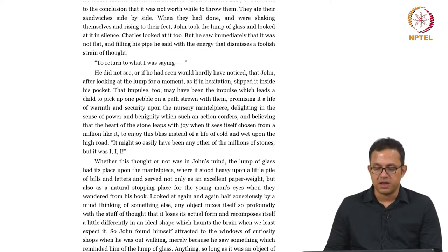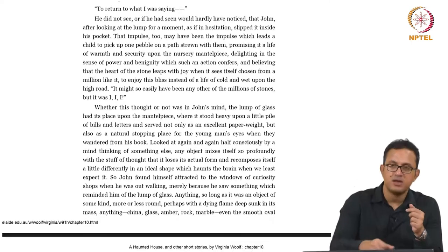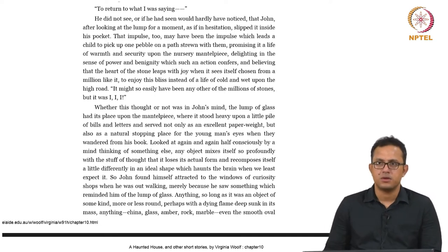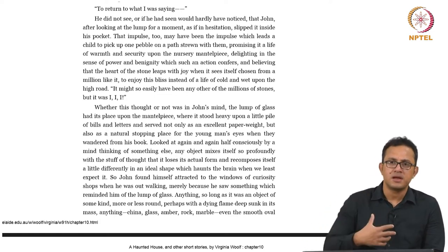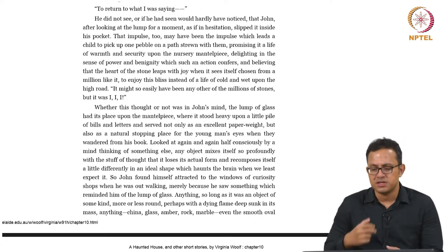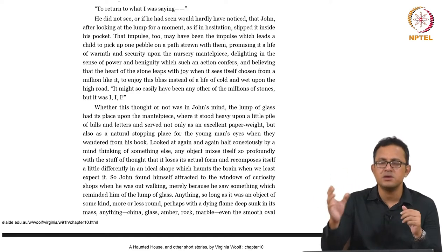Looked at again and again, half consciously by a mind thinking of something else, any object mixes itself so profoundly with the stuff of thought that it loses its actual form and recomposes itself a little differently in an ideal shape which haunts the brain when we least expect it. The engagement between the human brain and objects here is complex — abstract affective engagement, where looking at an object shapes your mind, and your imagination simultaneously reshapes the object through a combination of abstraction and materiality.